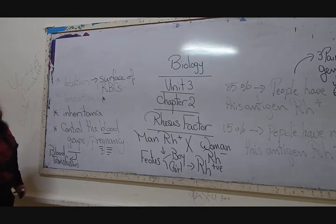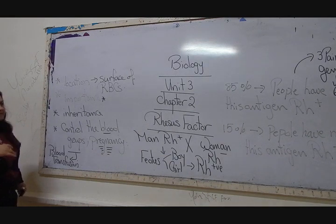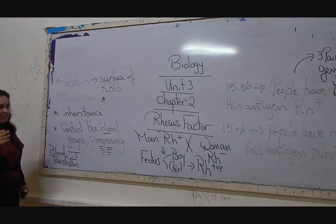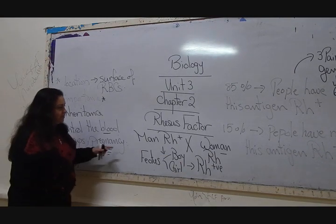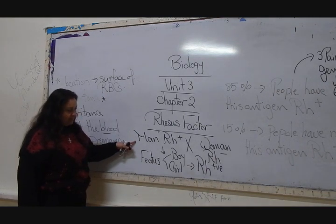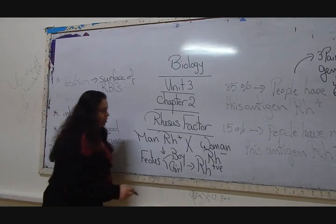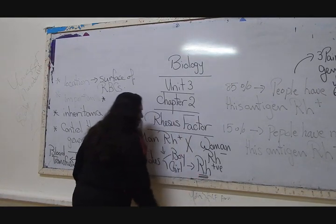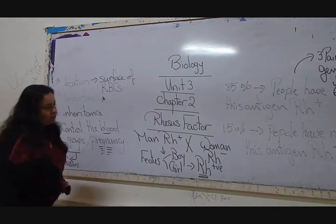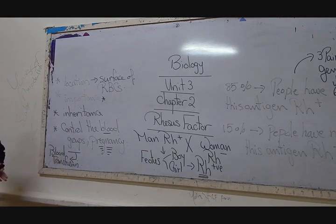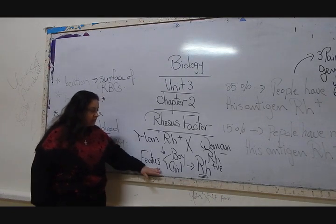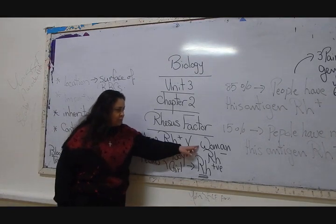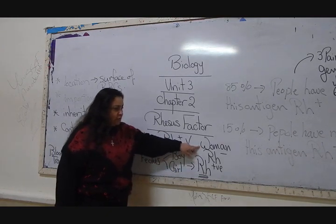So what is the problem? The problem is the two persons, the man and the woman, want to get another child, the second child, third child, fourth child, whatever the number they want to be. For the second child, who will be also RH positive, will be a big problem for the child. Why? During delivery of the first baby, a part of the blood of the fetus is mixed with the blood of his mother.